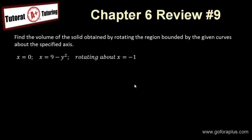Hi, this is Francis from A-plus Tutoring. In this session, I'm going to show you how to evaluate the problem in Stewart's textbook, Chapter 6 Review, No. 9. The question is to find the volume of a solid obtained by rotating the region bounded by the given curve about the axis x equals minus 1.